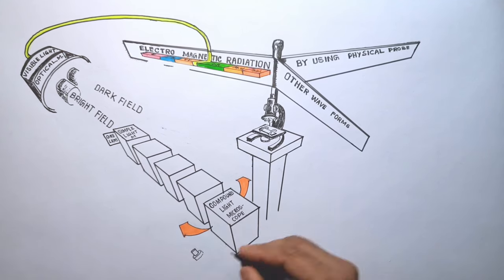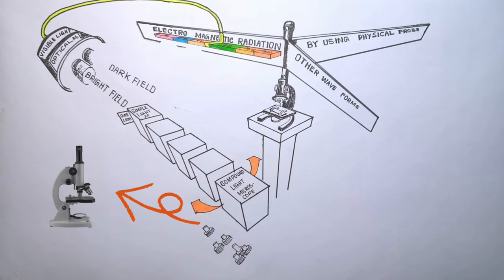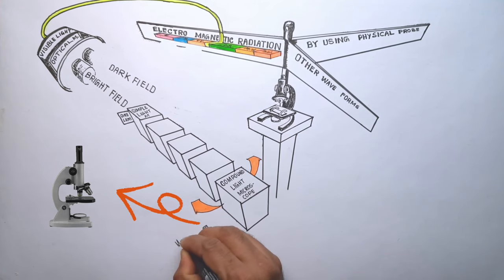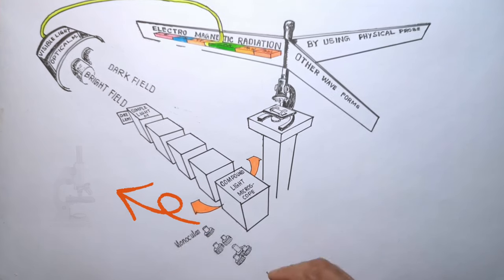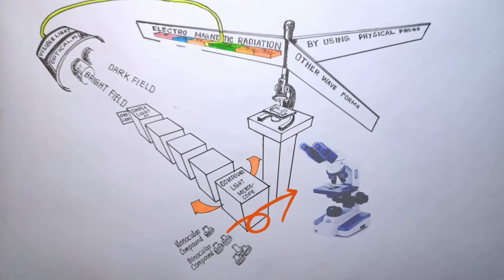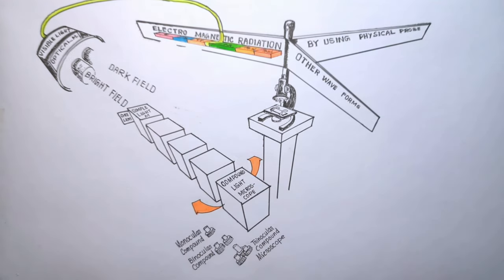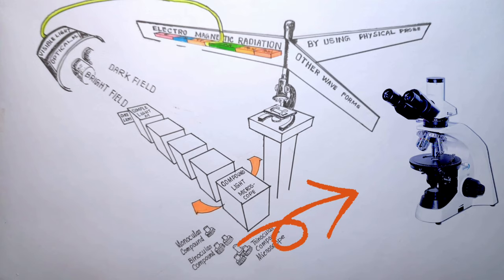Compound optical microscopes can be further divided into three subcategories depending on the number of viewing heads they have. The one with only single eyepiece or viewing head is known as the monocular compound light microscope. Likewise with two eyepiece lenses which proves to be more comfortable for general viewing is known as binocular compound light microscope. And the trinocular compound light microscope contains a third eyepiece tube that can be used by another person simultaneously or we can attach a CCD camera here.